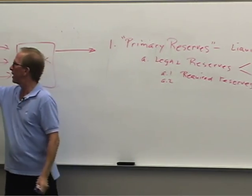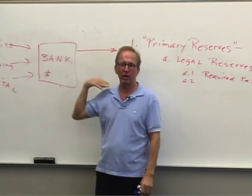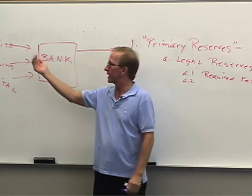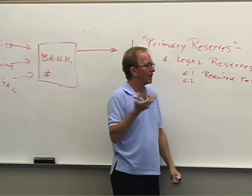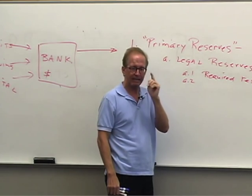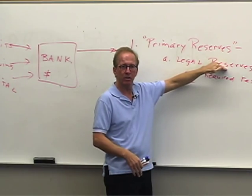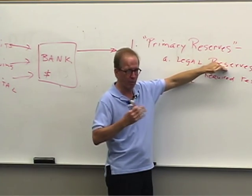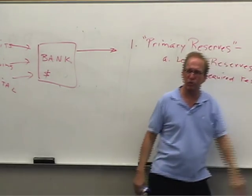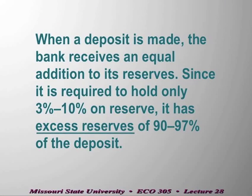Take a simple example: a deposit of $100 is made. The banker puts it in the cash drawer or vault. At that moment, that $100 counts as reserves. The banker says, I only have to hold $10 on reserve, but I'm holding $100. So the remainder — $90 — would be an excess reserve.